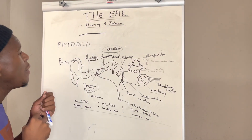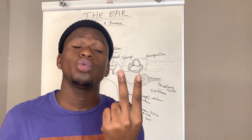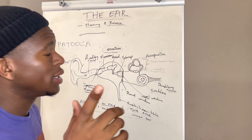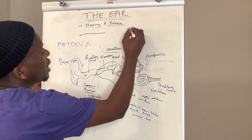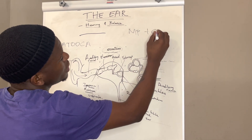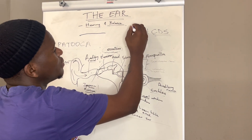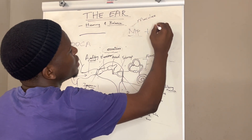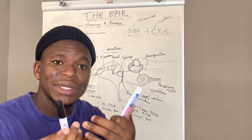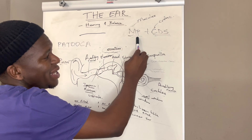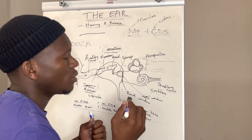Now we move to balance. For balance, there are two receptors in the semicircular canals: the cristae and the maculae. To help remember the process we can use a mnemonic. The macula is stimulated whenever there is a change in position of the head, while the cristae are stimulated whenever there is a change in direction and speed.